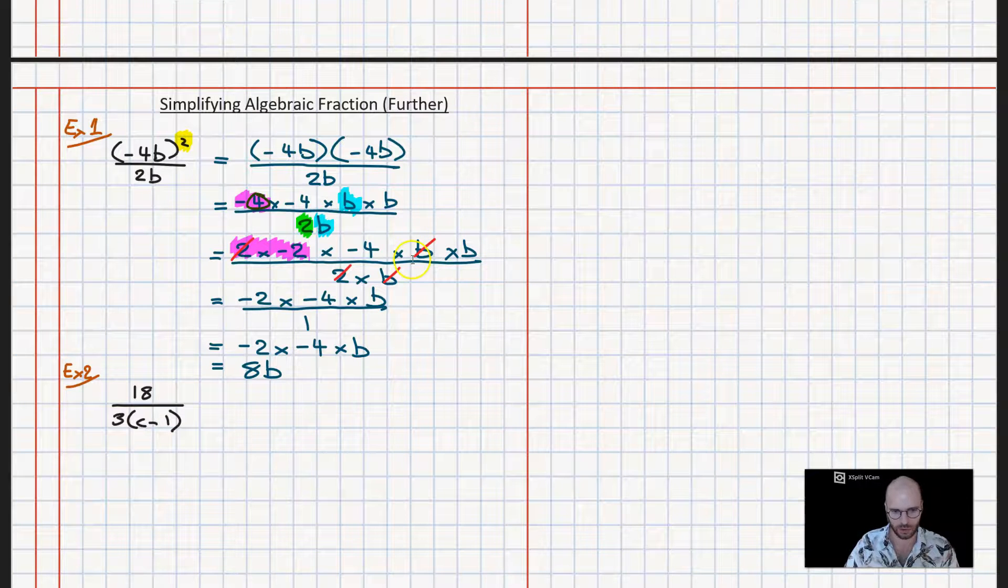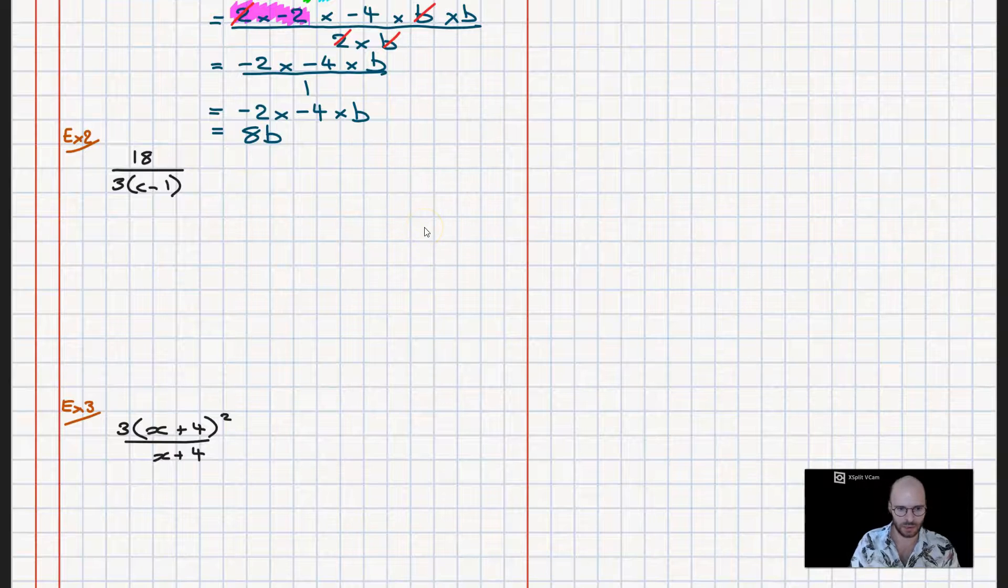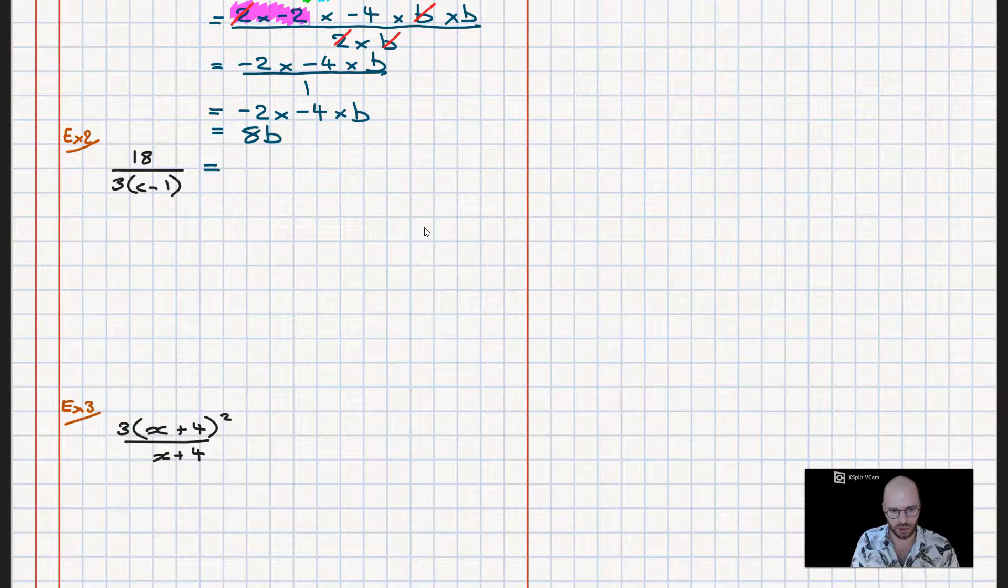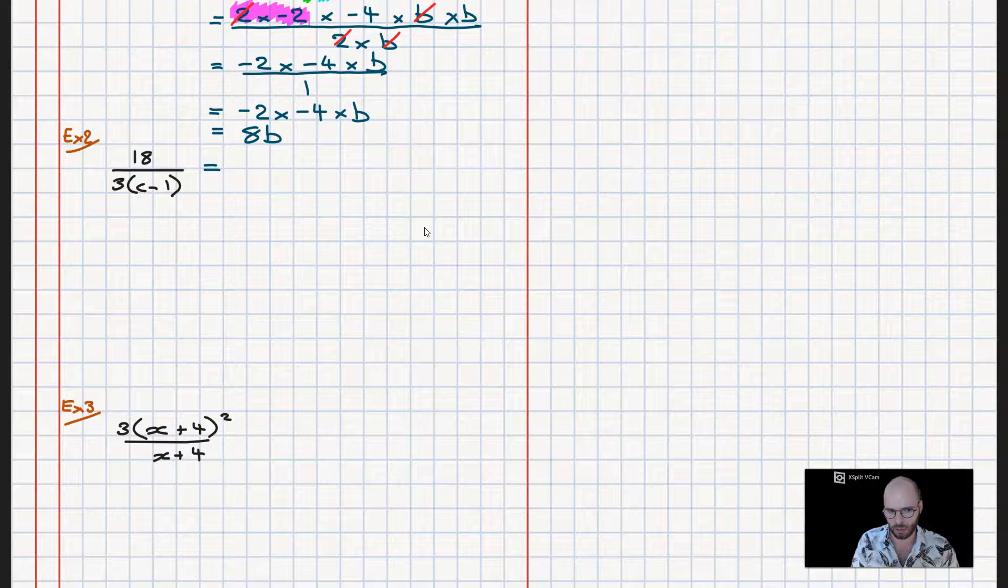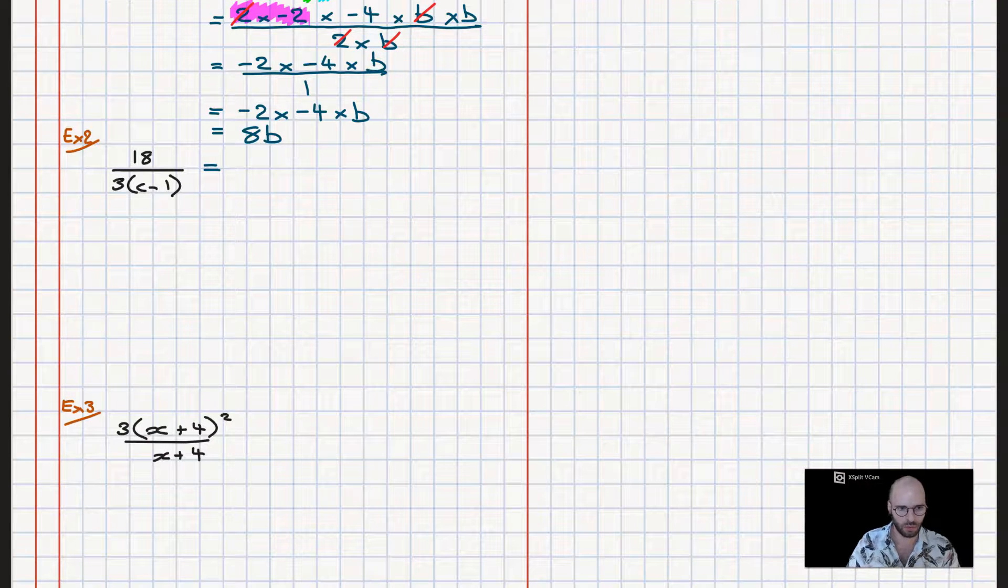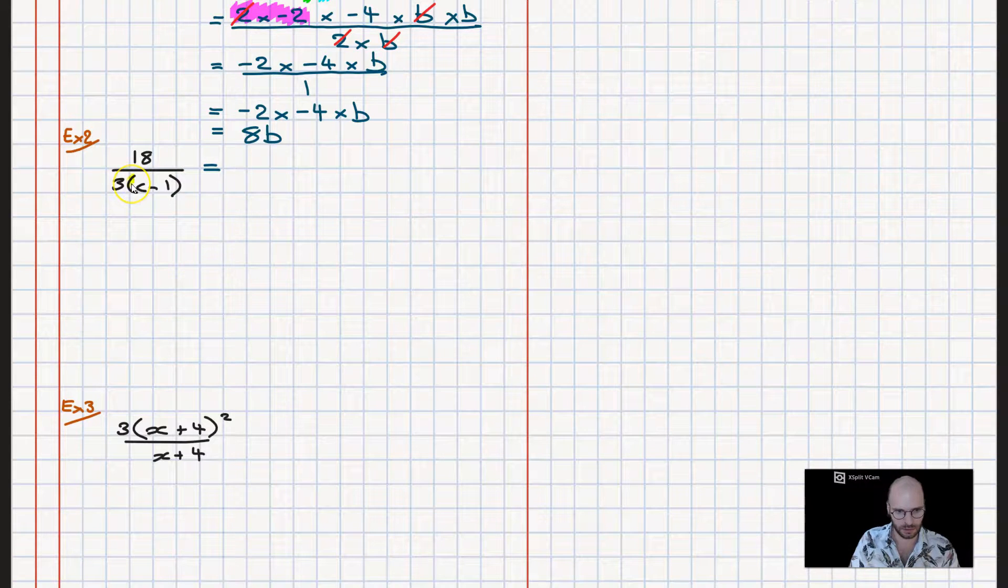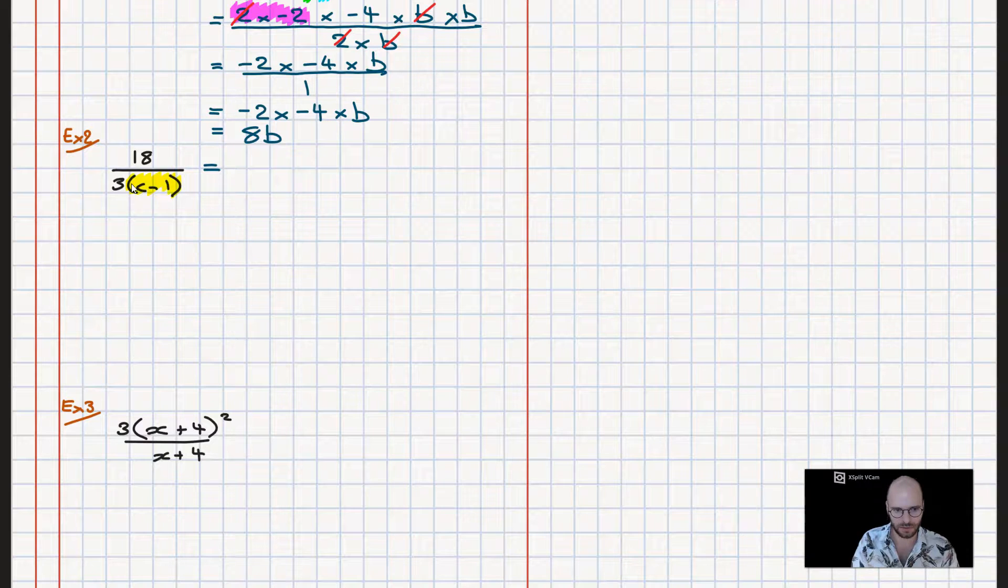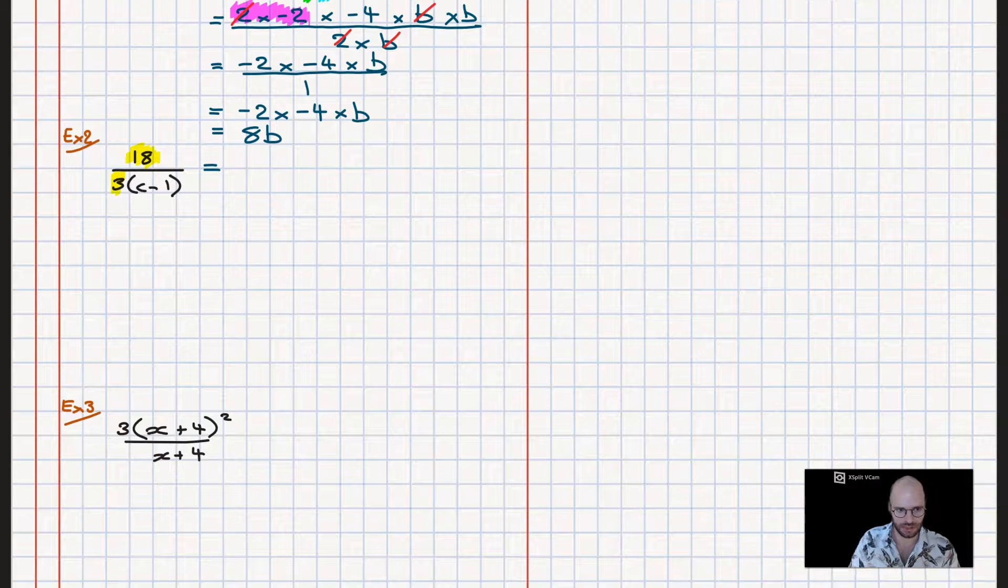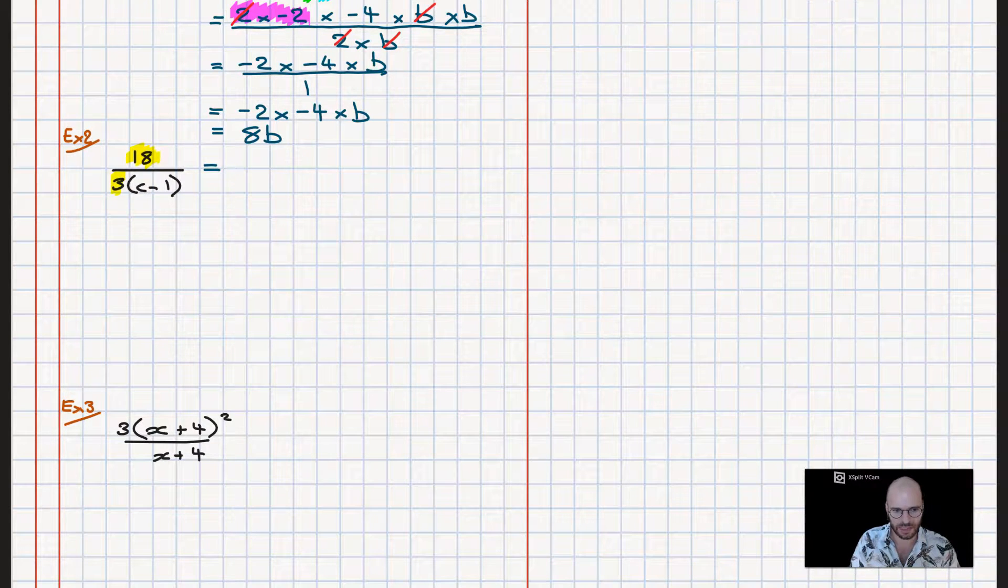All right, example two. We have 18 over 3 times c minus 1. Let's think a little bit forward and ask ourselves what could we potentially factorize here. What we can see is we're definitely not going to be able to factorize the c minus 1 because there's nothing in the numerator that could be cancelled out by that. Rather, we're going to be dealing with the 18 and the 3. So let's take a shortcut and say, does 3 divide into 18? And the answer is yes it does.